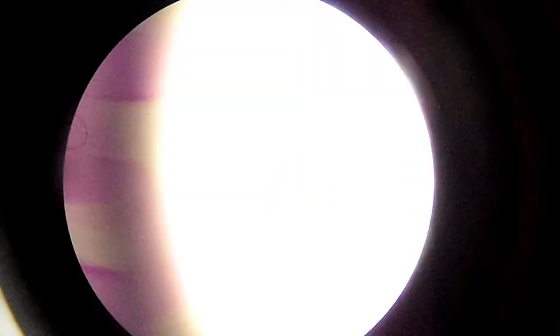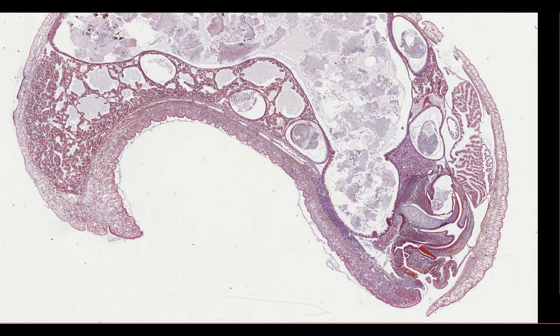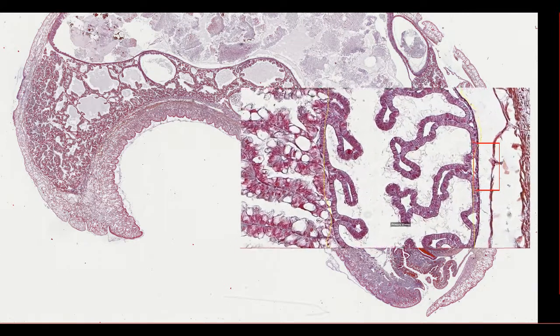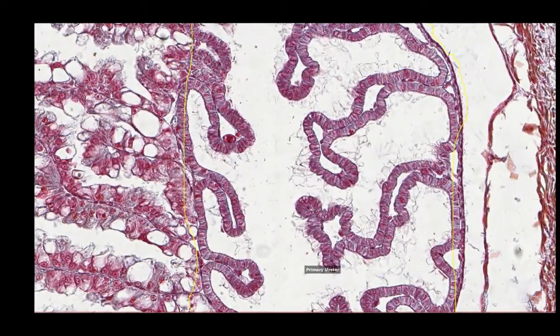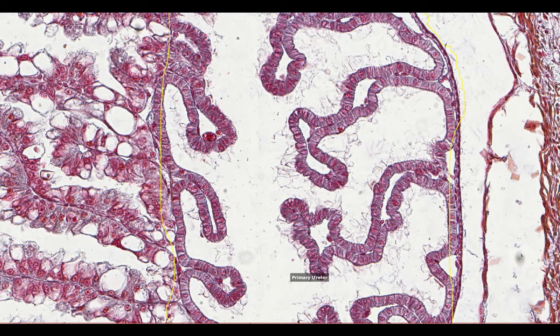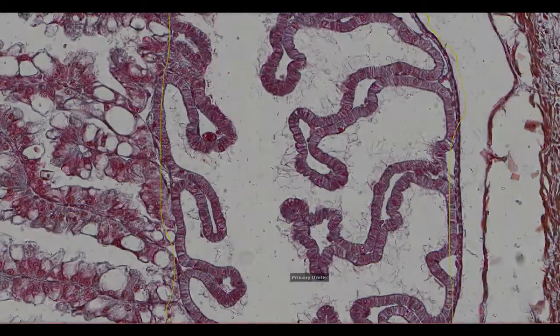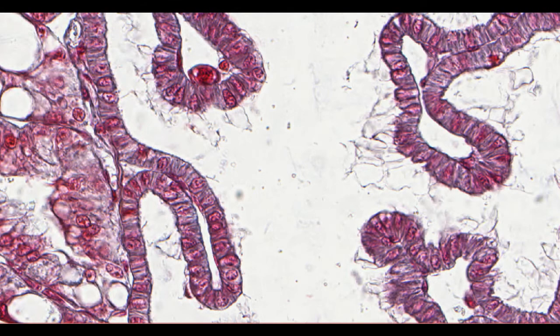Number five: reabsorption. Reabsorption of water and solutes does occur in the glandular kidney, but most of it happens further down the excretory system in the primary ureter. The ureter is lined by highly active cells and has slightly folded walls, so more cells can have contact with the lumen. The cells are lined by microvilli, also known as a brush border, giving a fuzzy appearance to the cell surface. These microvilli increase cell surface area, meaning more space for membrane channels and transporters involved in reabsorption.